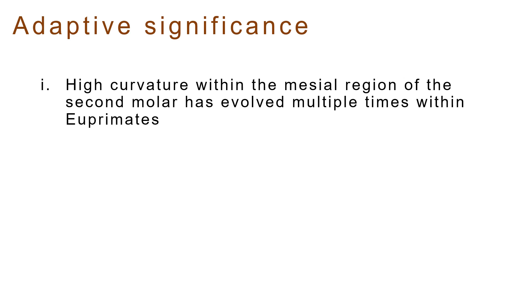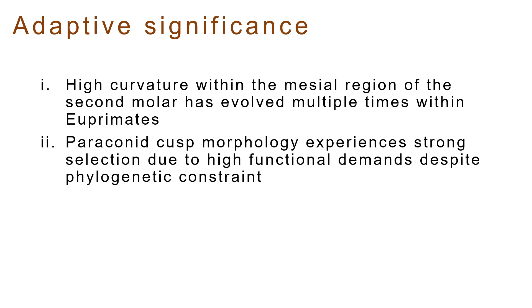Let's zoom back out and think about the adaptive significance of all of this. By assessing cusp morphology as continuous regional curvature instead of discrete character states, we were able to study paraconid evolution without subjective categorization. Our results suggest that while there was an overarching pattern of paraconid loss, high curvature within the mesial region of the second molar has evolved multiple times within the euprimates without strong correlation in other cusps across the tooth surface, which supports the notion that paraconid cusp morphology experiences strong selection as a consequence of functional demands, in spite of phylogenetic constraint.